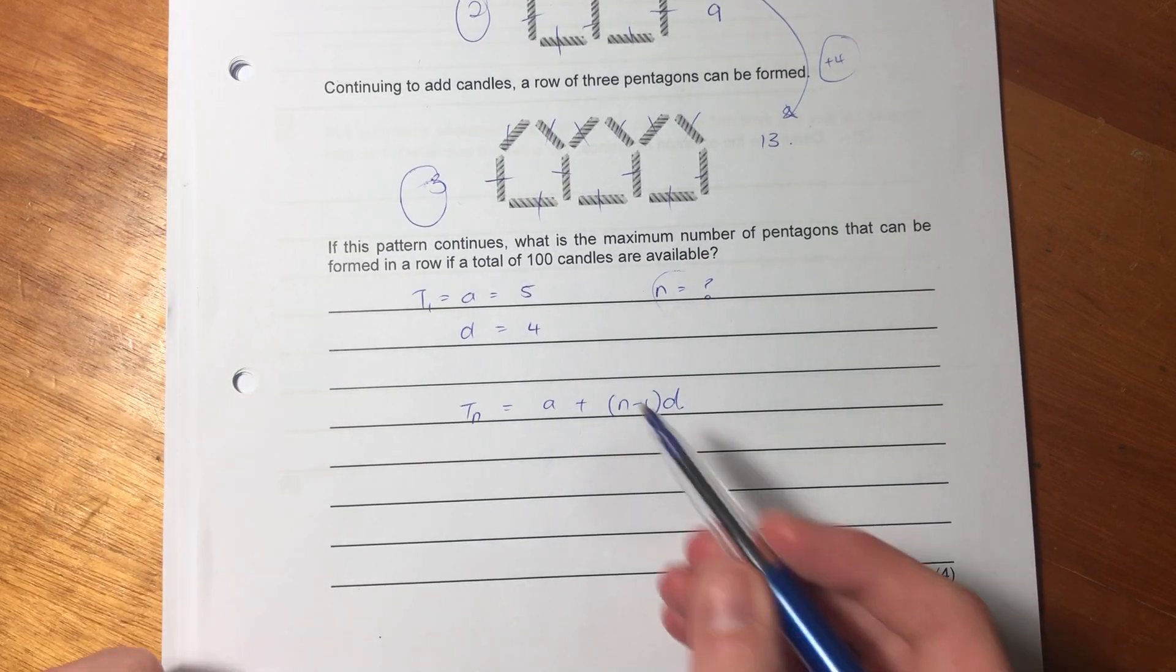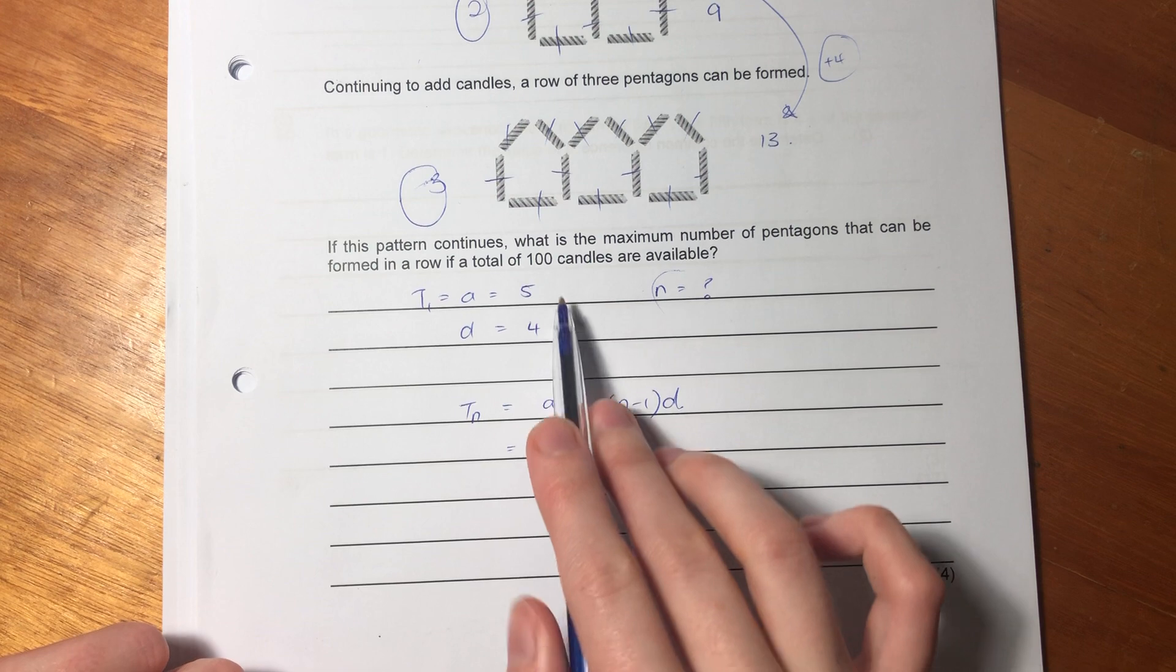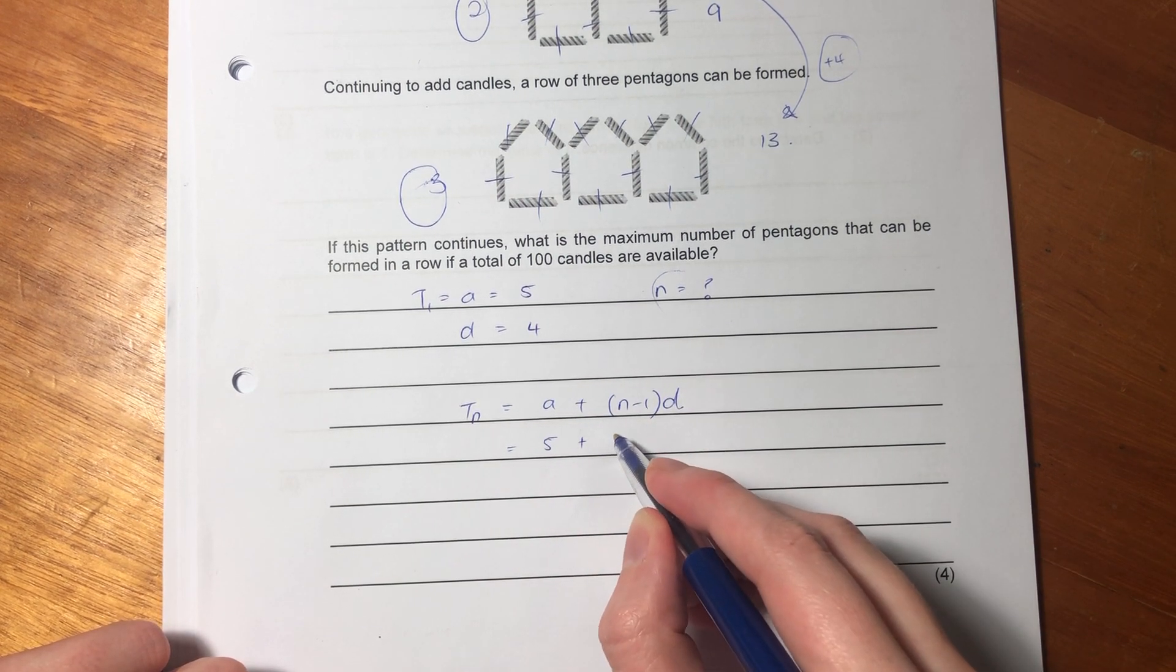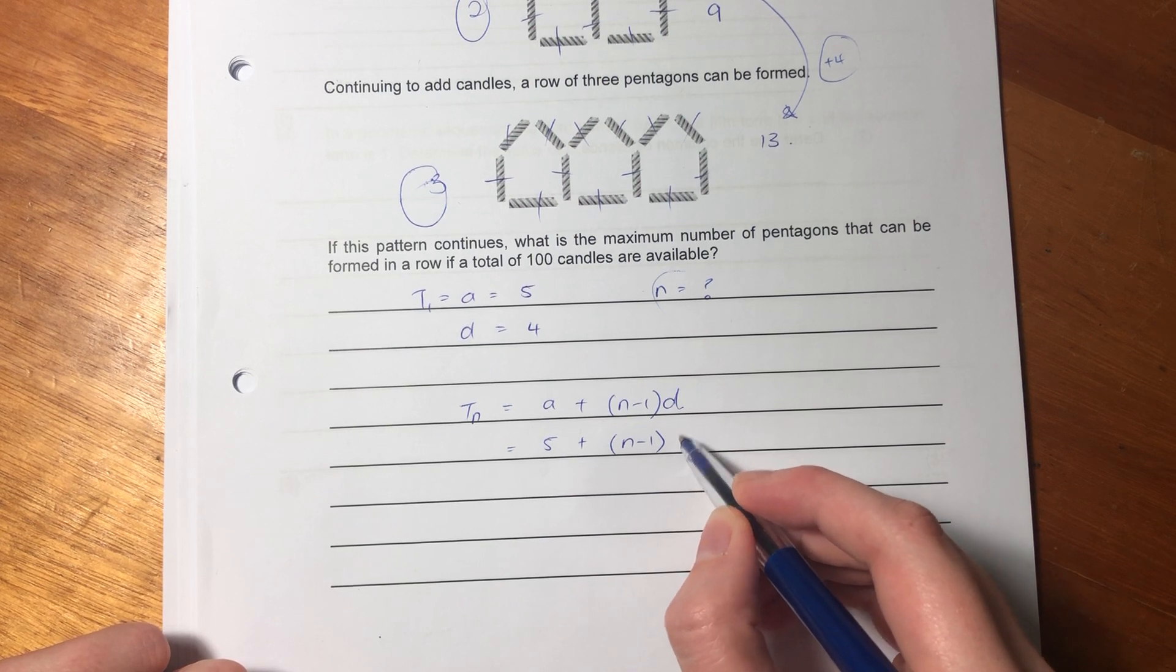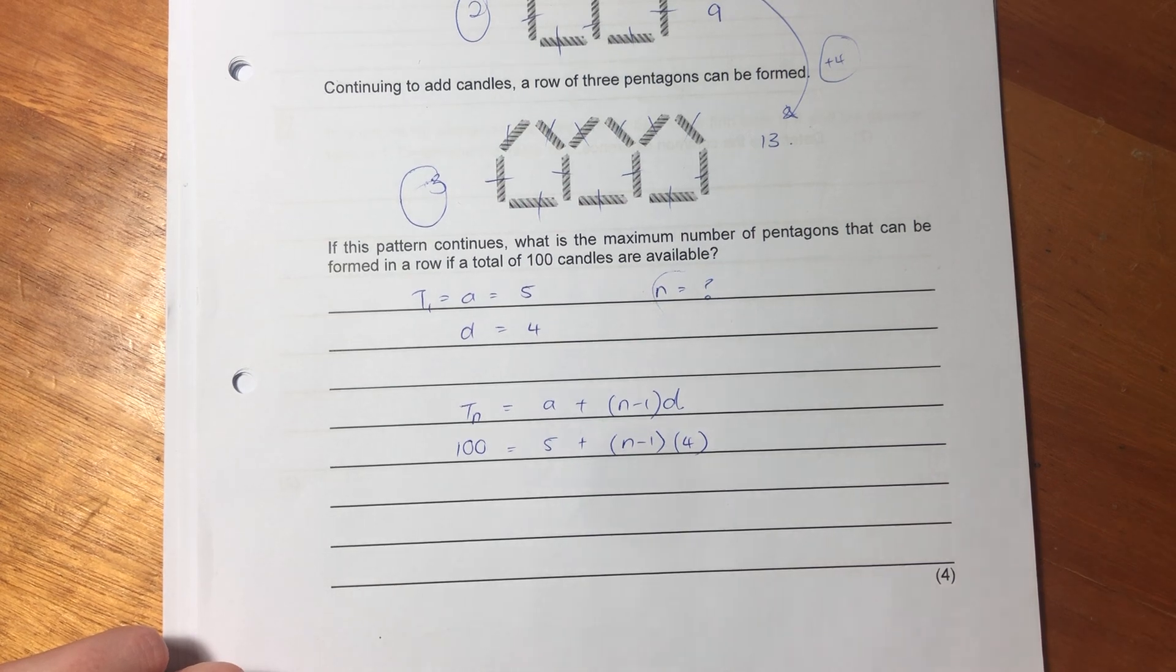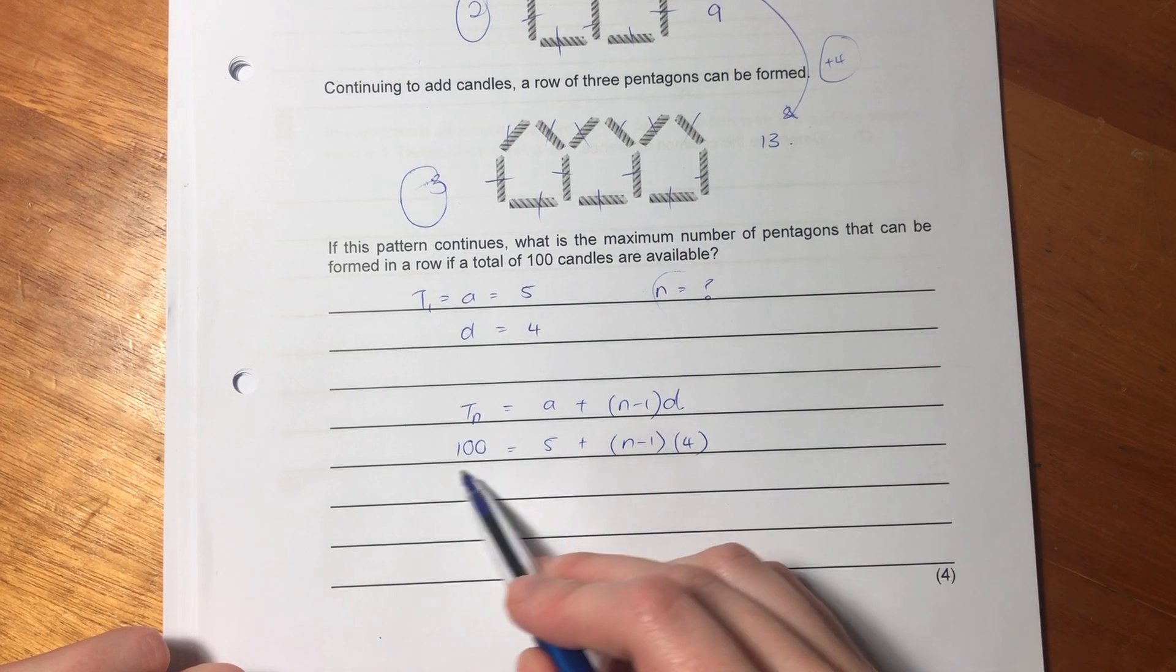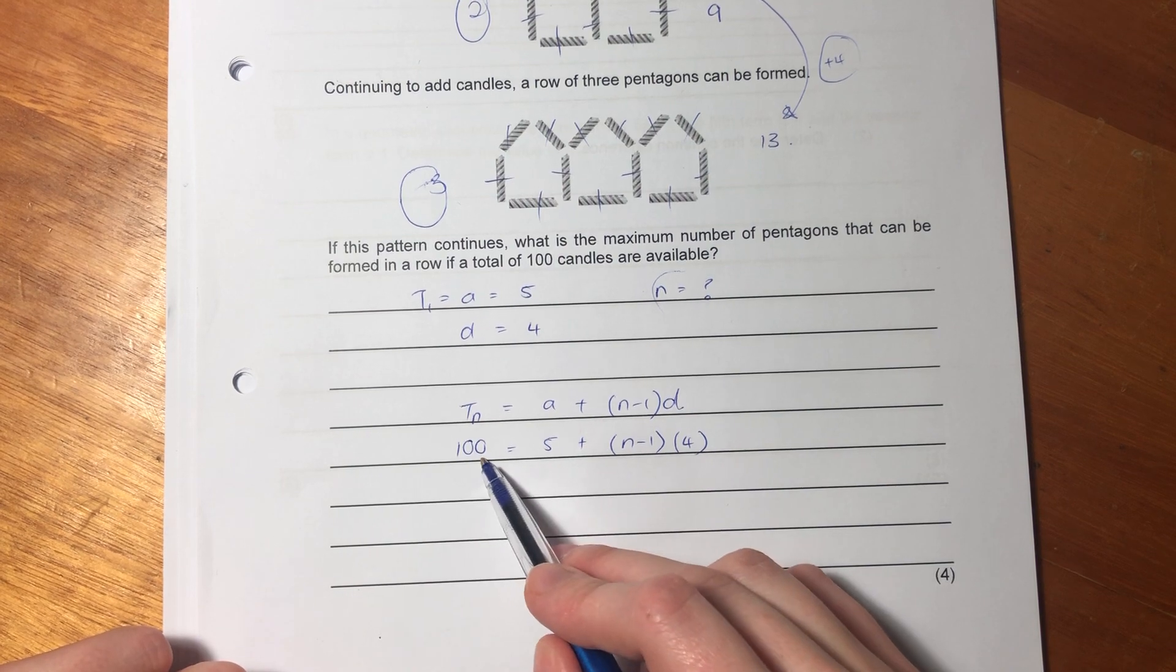Then what I'm gonna do is I'm gonna substitute each of my inputs into this without knowing N, obviously, because that is what we're trying to solve. So D, we said, is four. But we know that TN equals 100. That is a number of candles that, or that whole term has 100 candles.